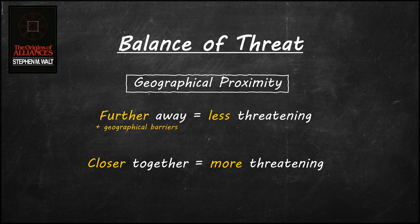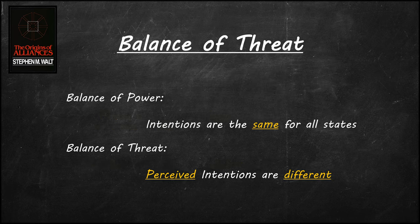In addition to offensive and defensive military capabilities, Walt takes into account geographical proximity. The closer states are to each other, the more likely it is that they would find each other more threatening. Walt also adds geographical barriers such as mountains, oceans, and deserts as part of the geographical proximity factor. The two types of military capabilities and geographical proximity affect each other. States with offensive military capabilities would appear less threatening if they are further away, and the inverse would also be possible.